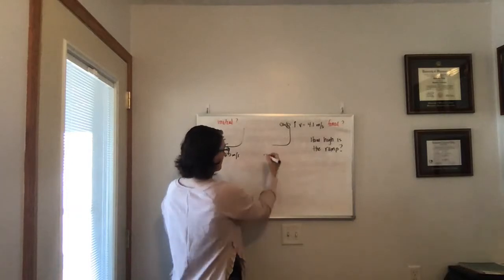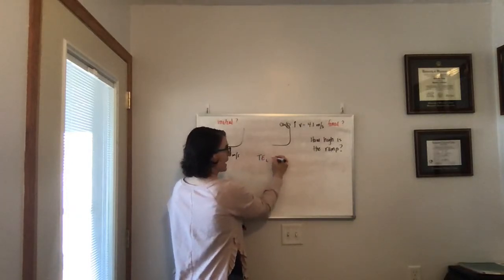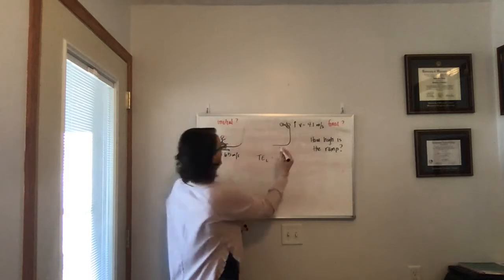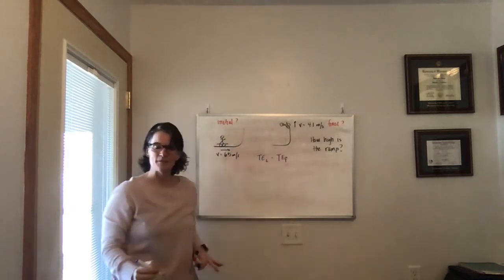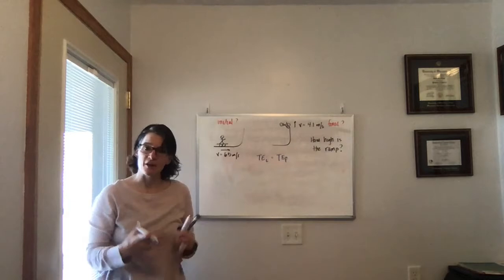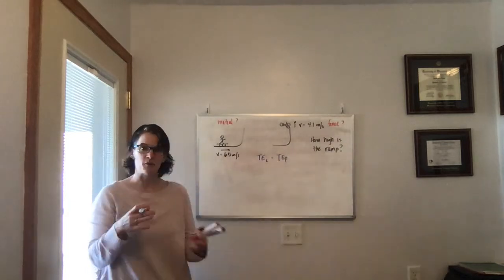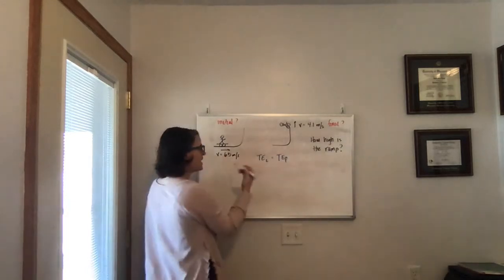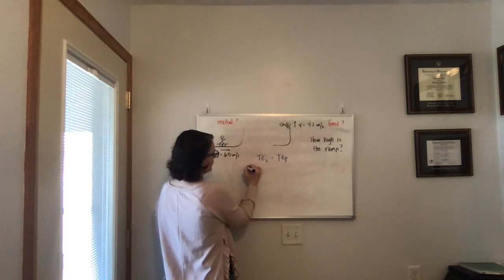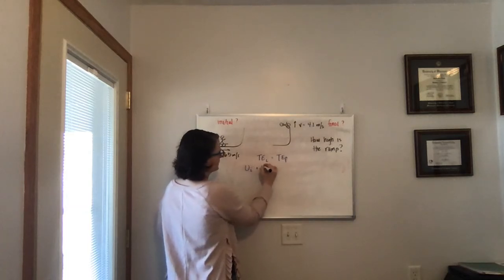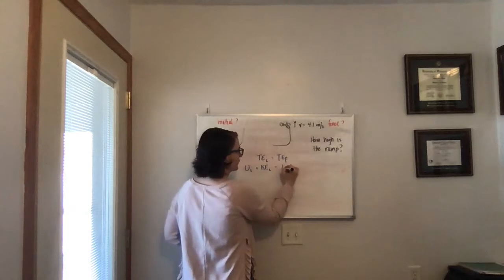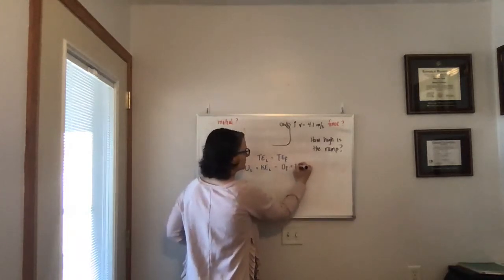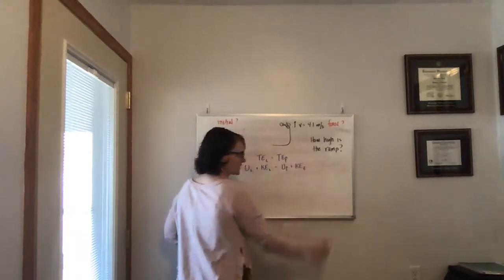So we remember that the total energy of the system at the beginning, our initial, has to equal the total energy of the system at the end. And that total energy is made up of our mechanical energy in the system. And in this case, we have both potential and kinetic energy that we want to think about. So our initial potential plus our initial kinetic energy is going to equal our final potential plus our final kinetic energy.